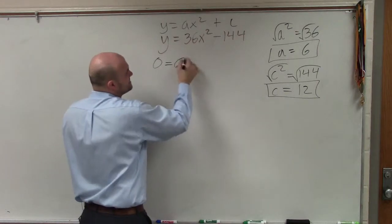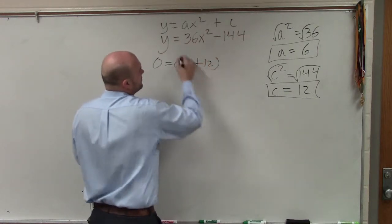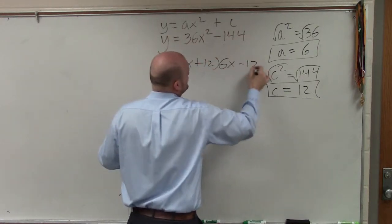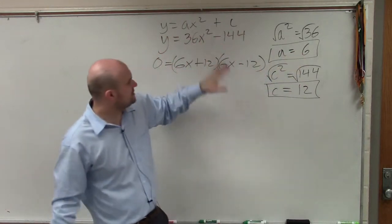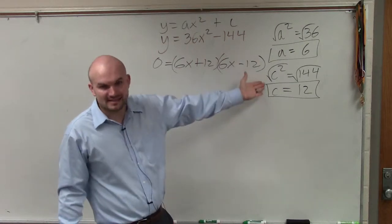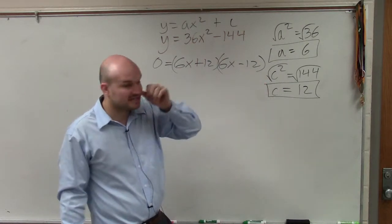And we say, I'm going to take 6x plus 12 and then 6x minus 12. So we basically take our squared terms, include the x, and we use the positive and the negative to multiply them to get us to equal 0.